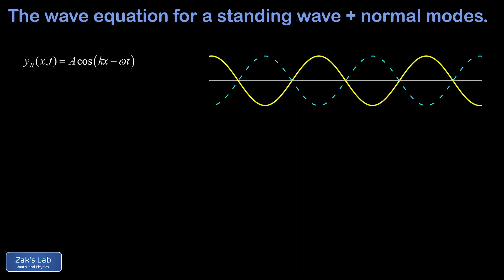A wave traveling to the right can be represented by the wave function yr(x,t) = A cos(kx - ωt), and I'll post a link to the video where this was first derived. Similarly, a wave traveling to the left is given by yl(x,t) = A cos(kx + ωt).